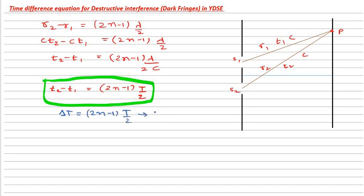You cannot put N is equal to 0 because N equals 0 is reserved for the central bright fringe, which is formed over here, and you cannot apply this equation at this point. This is the center of the screen because here bright fringe is formed and we are discussing about the dark fringes.